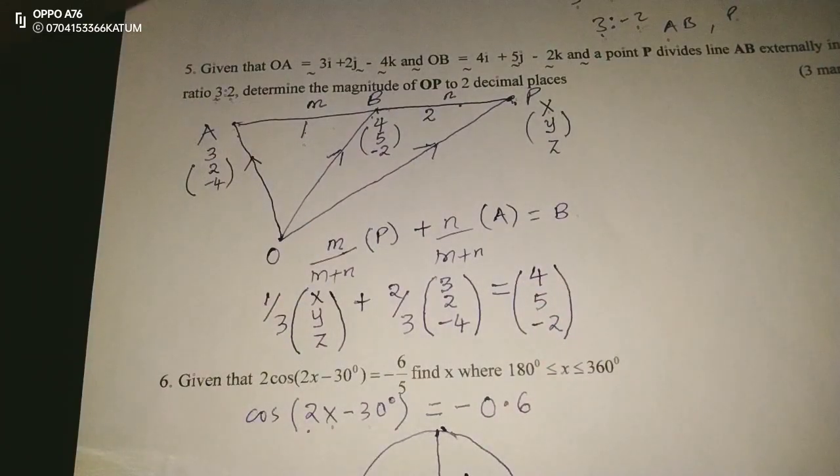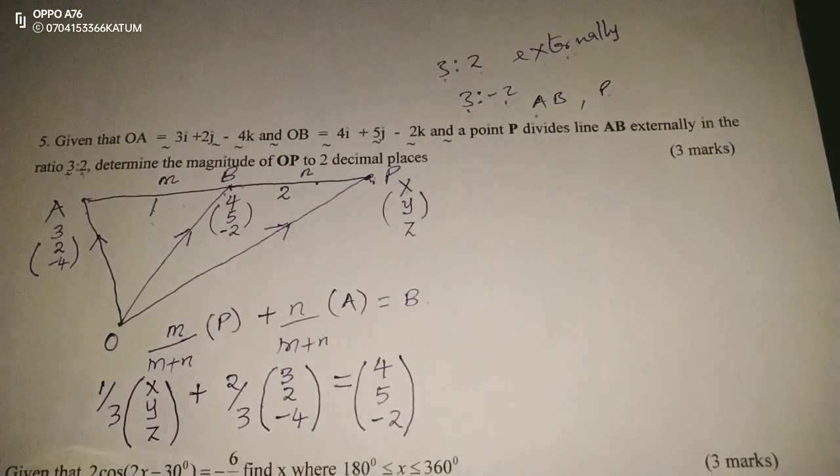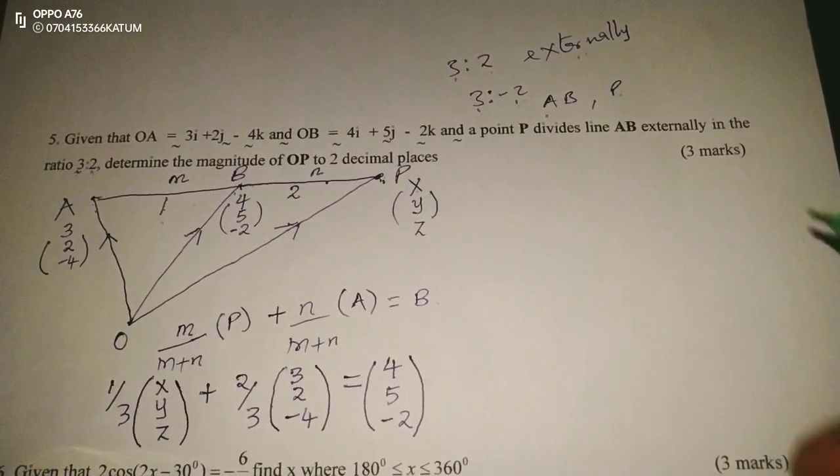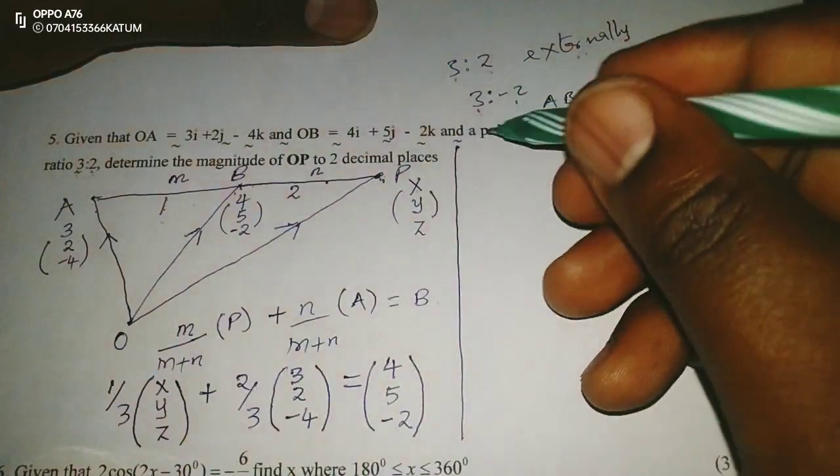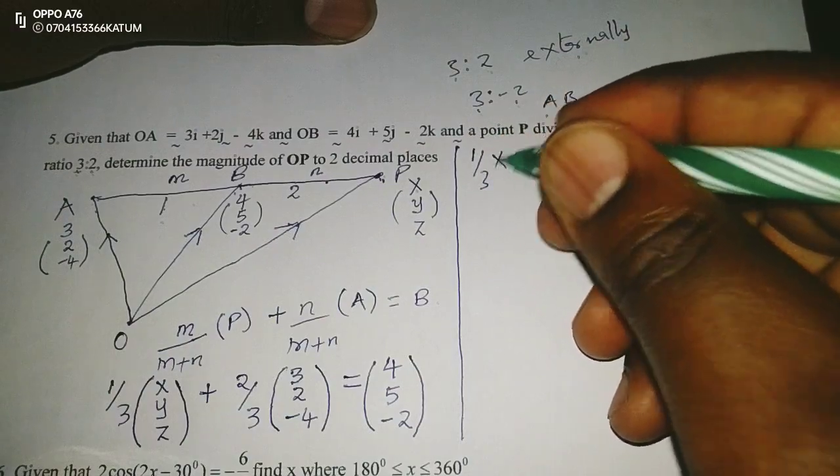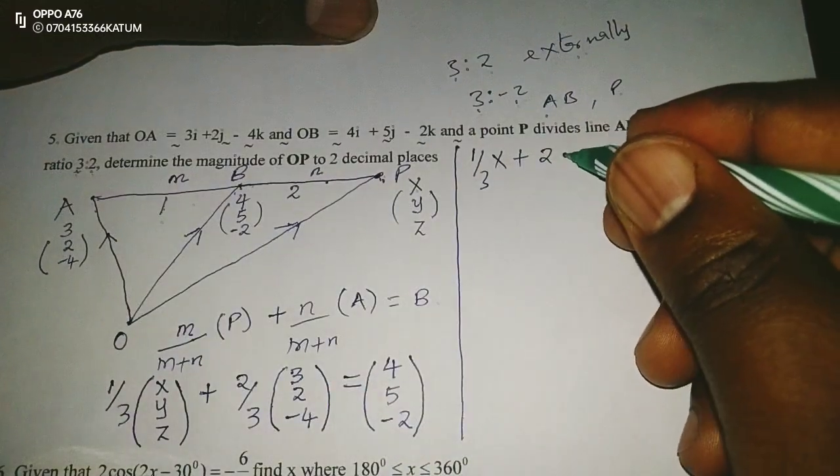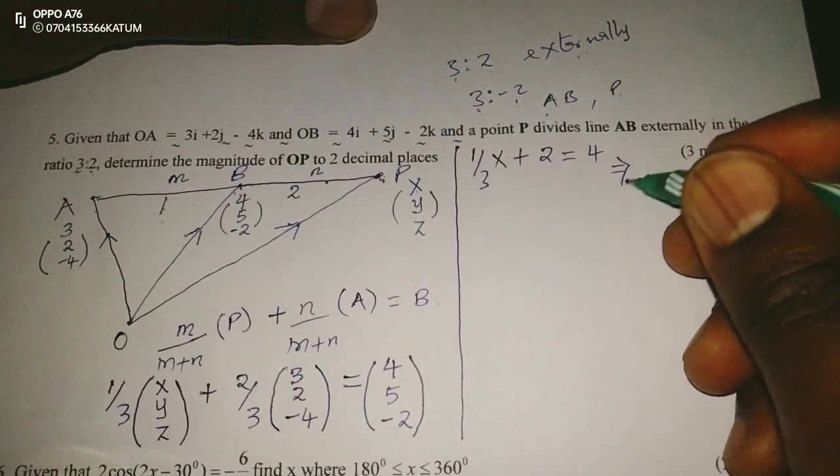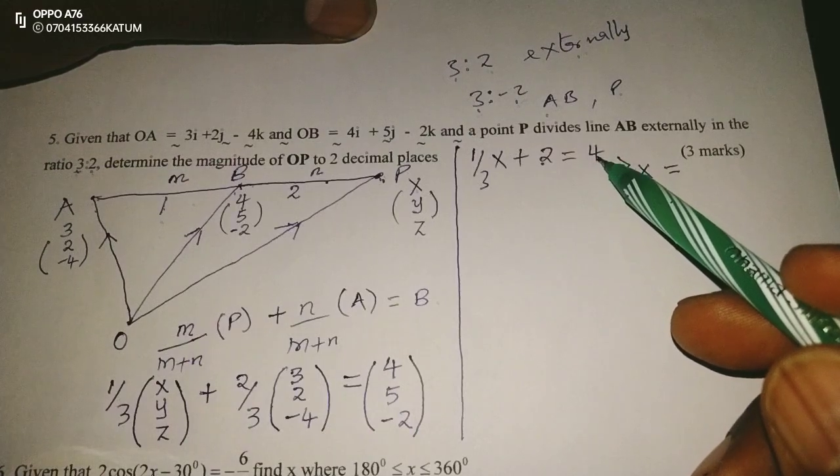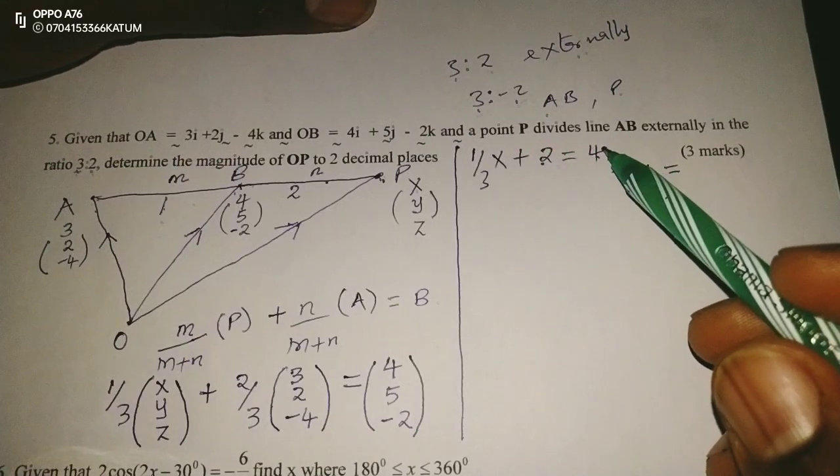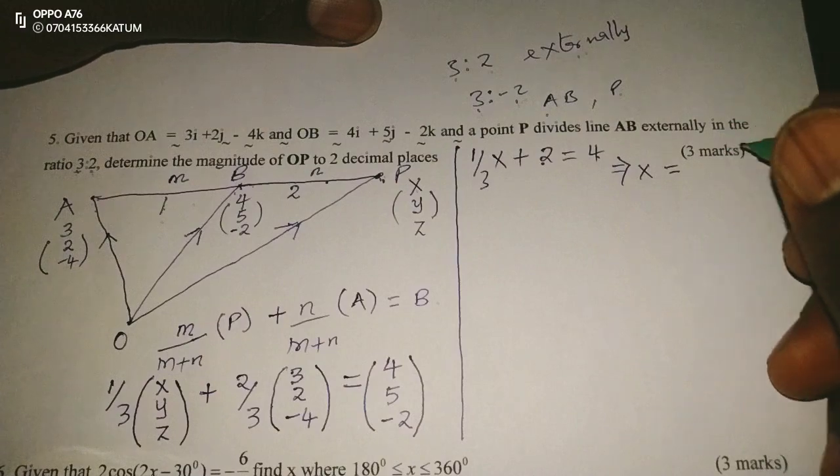So now we can solve this now. This is what we are supposed to solve, and upon solving it, we will get the position of P, and eventually the magnitude. So now we can say, a third X plus two thirds by three, we get two, equals to four. So we can get X by saying, when two comes to this side, it becomes four minus two. Therefore, a third X equals to two. And if a third X equals to two, to get the value of X, we can multiply by three both sides, and this will be six.